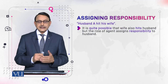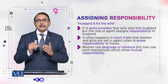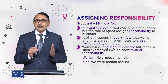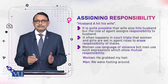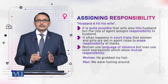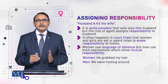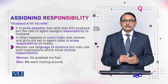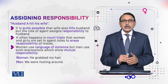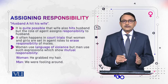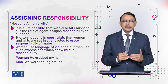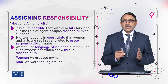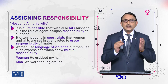For example, consider this sentence: 'Husband A hit his wife.' In this case, husband A is mentioned and the responsibility of hitting is fixed upon the husband. It is quite likely that the wife may have also hit the husband, but this is not mentioned. From a feminist point of view, when men are made responsible for crime or violence against women, the whole responsibility is fixed upon men by assigning them the agent role in the sentence.